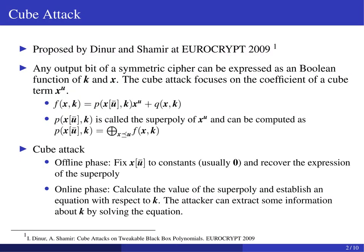The cube attack was proposed by Dinan and Shamir at Eurocrypt 2009. Any output bit of a symmetric cipher can be expressed as a Boolean function of the secret variables k and the public variables x. The coefficient of a cube term x^u in this Boolean function is called the superpoly, whose value can be calculated according to a Mobius transform.